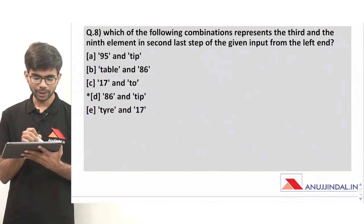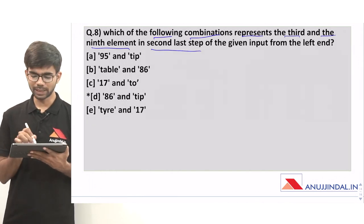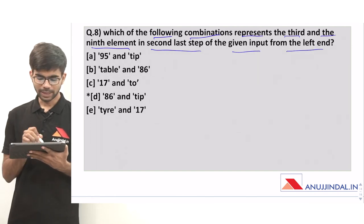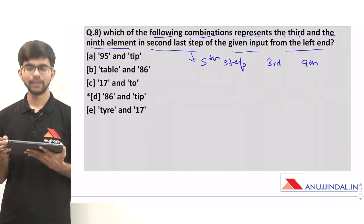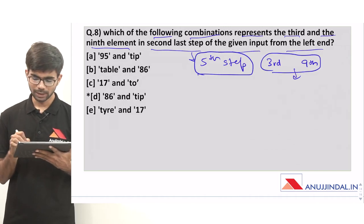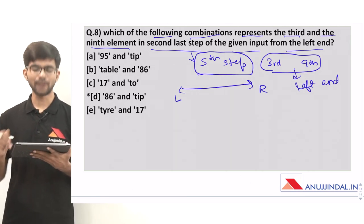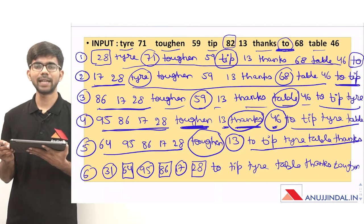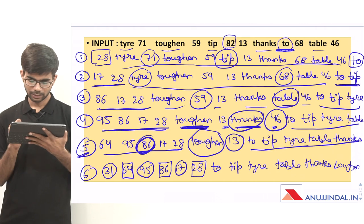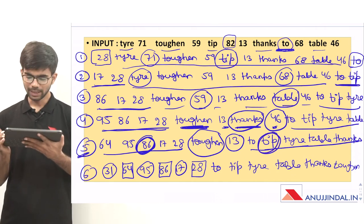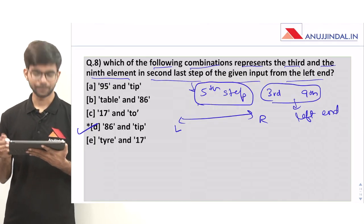Question 8: Which combination represents the third and ninth elements in the second-last step of the given input from the left end? The second-last step is step 5. In step 5, the third element from the left is 86 and the ninth element from the left is 'tip'. So the correct option is option D, 86 and tip.